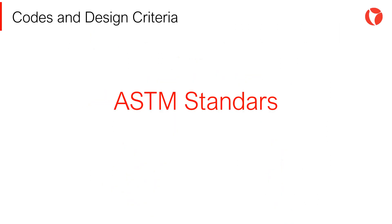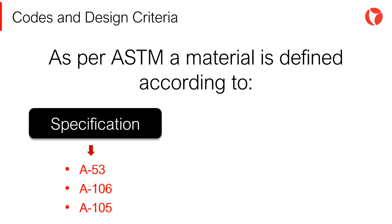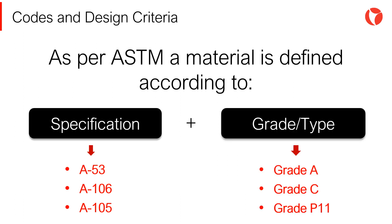The standards of the American Society for Testing and Materials, ASTM, cover everything related to the materials to be used in piping systems and their corresponding tests. As per the ASTM, a material is defined according to the specification and the grade or type — in this case, it should be read as A53 grade A, B, or C.